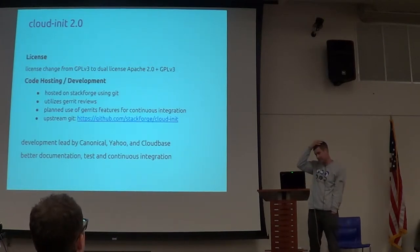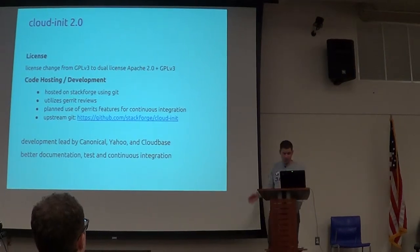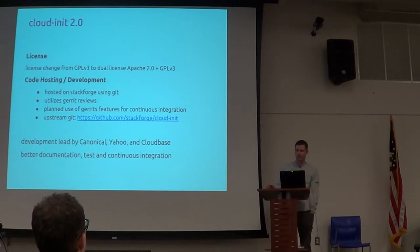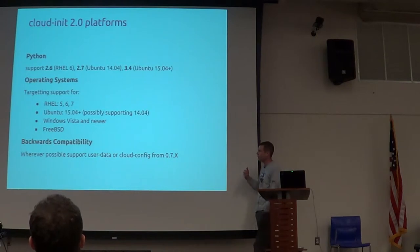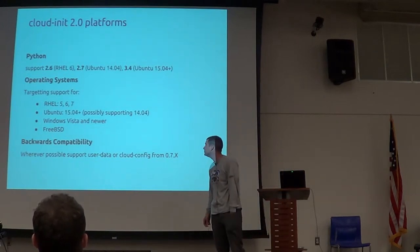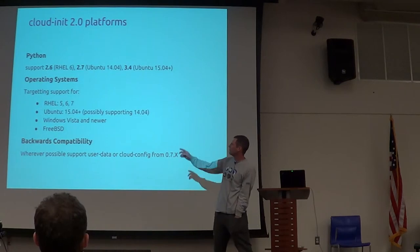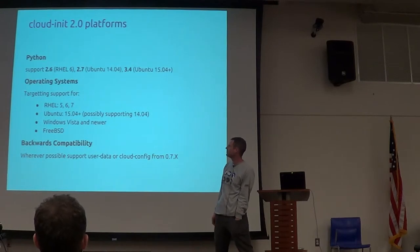We are changing the license from GPLv3 to Apache 2, which is interestingly more accessible to a lot of people and a lot of companies. CloudInit 2.0 will be in Python and will support 2.6 — we'll support Python 2.6 for RHEL 6.